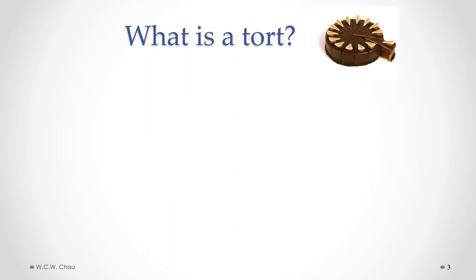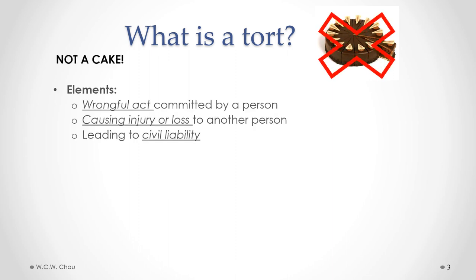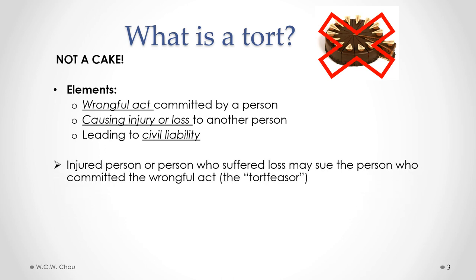What is a tort? It's certainly not a cake. A legal tort is made up of three different elements: there has to be some kind of wrongful act committed by a person, and that act causes an injury or loss to another person, which leads to civil liability. Civil liability means that the injured person or the person who suffered the loss may sue the person who committed the wrongful act — the technical legal term for whom is a tortfeasor.